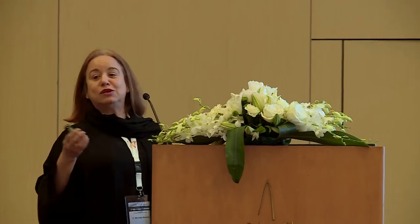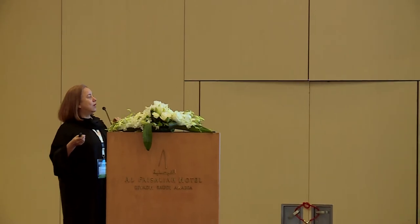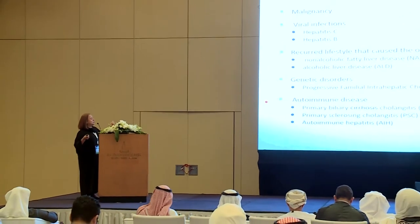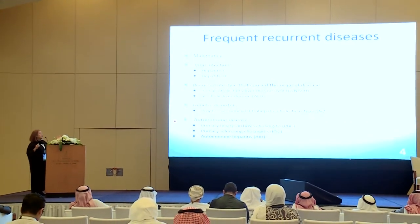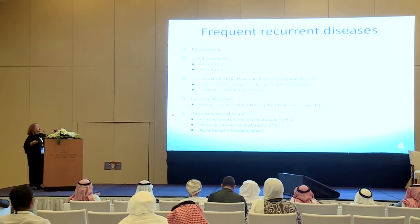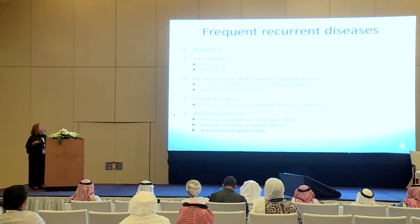What are the frequent recurrent diseases? Malignancy, viral infections — hepatitis C and B — lifestyle factors that caused the original disease like alcoholic liver disease or non-alcoholic fatty liver disease. Genetic disorders like progressive familial intrahepatic cholestasis type 1 and 2 — I'll exclude PFIC to save time, but I'm willing to discuss management in the Q&A. Autoimmune disorders like primary biliary cholangitis, PSC, and autoimmune hepatitis — these will be the focus of my lecture, as they are most relevant to the pediatric audience.